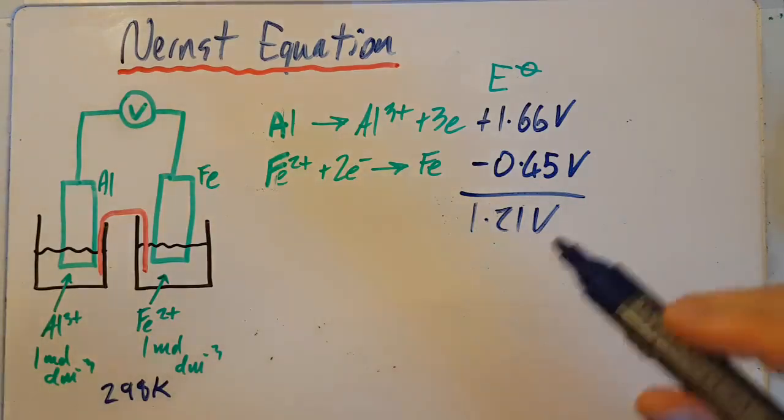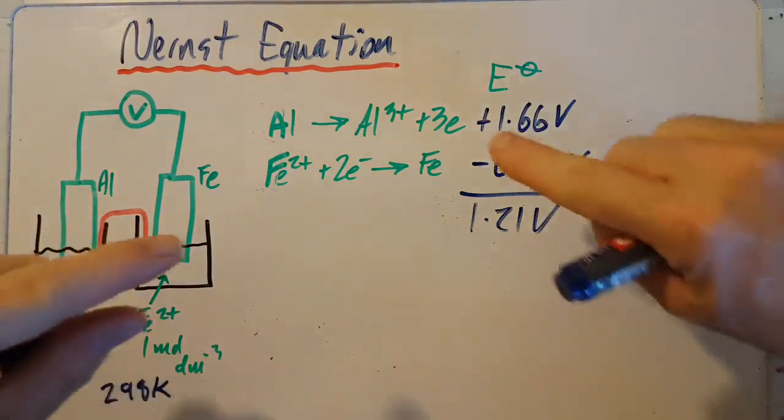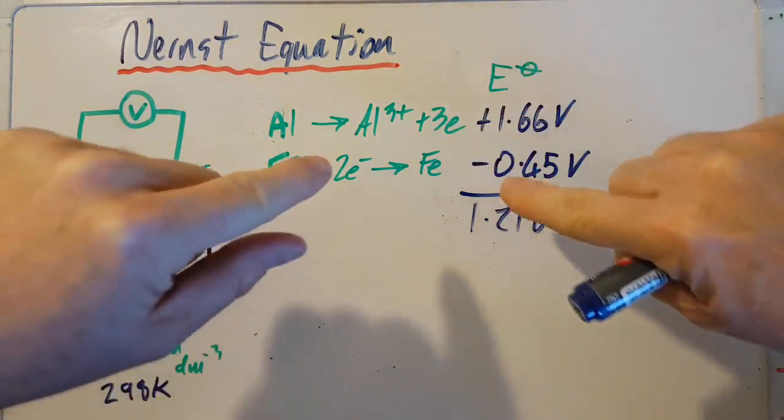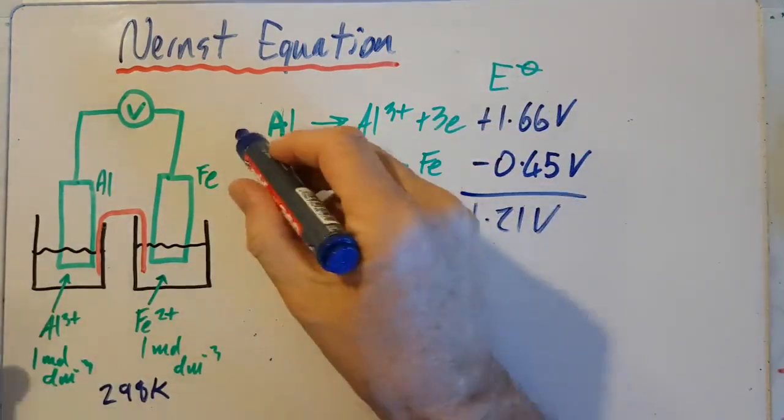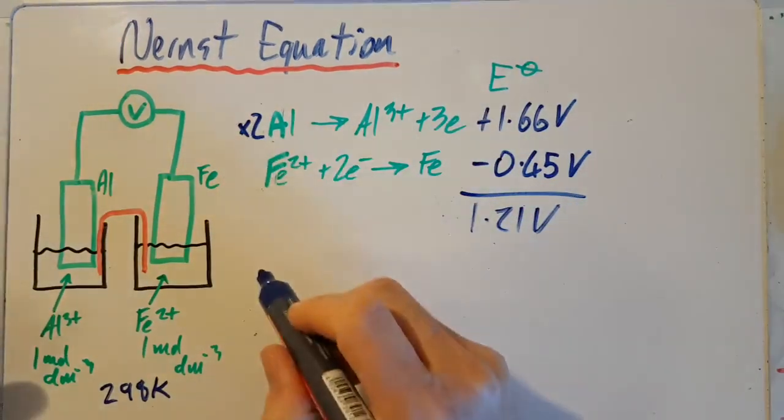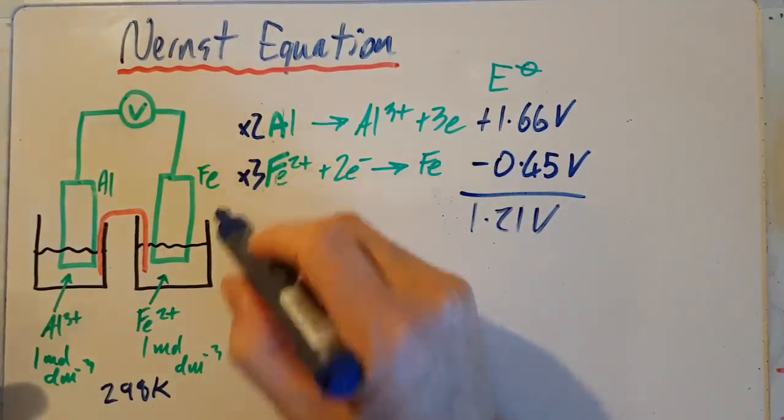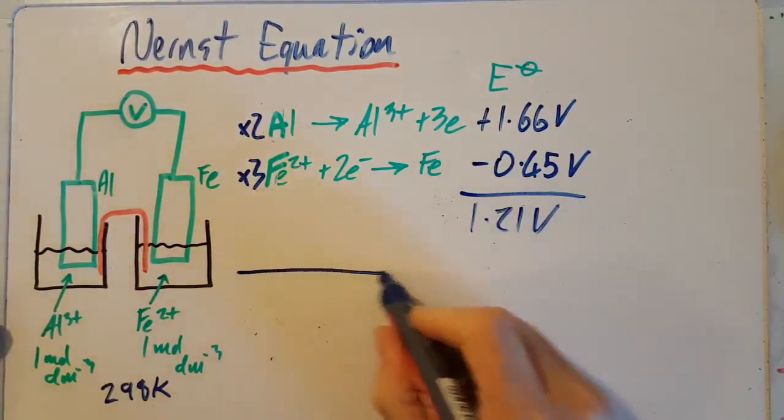If I want the equation for the cell, I'm going to have to fix those electrons. I'm making three there and using two there. So if I double the aluminum and I triple the iron, then I'm going to get the equation for the cell.